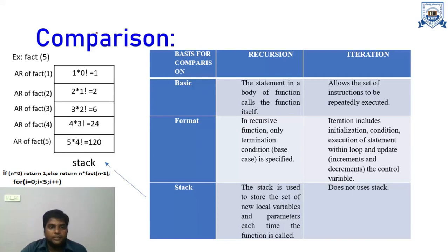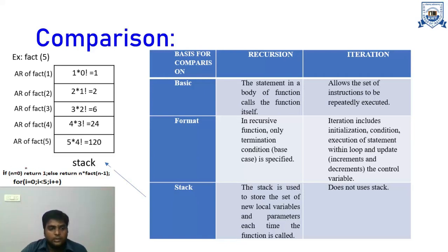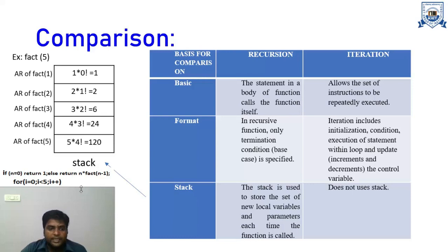For example, if we want to calculate factorial 5 using recursion, we provide a base condition: if n equals 0, return 1. This is the terminating condition for the function call. If the base condition is not true, we move to n cross factorial(n-1), and this function call repeats until the base condition is true. In iteration, we use initialization, a controlling condition, and an update statement within the loop — as seen in a for loop where we initialize i to 0, then have a controlling condition, then update i.